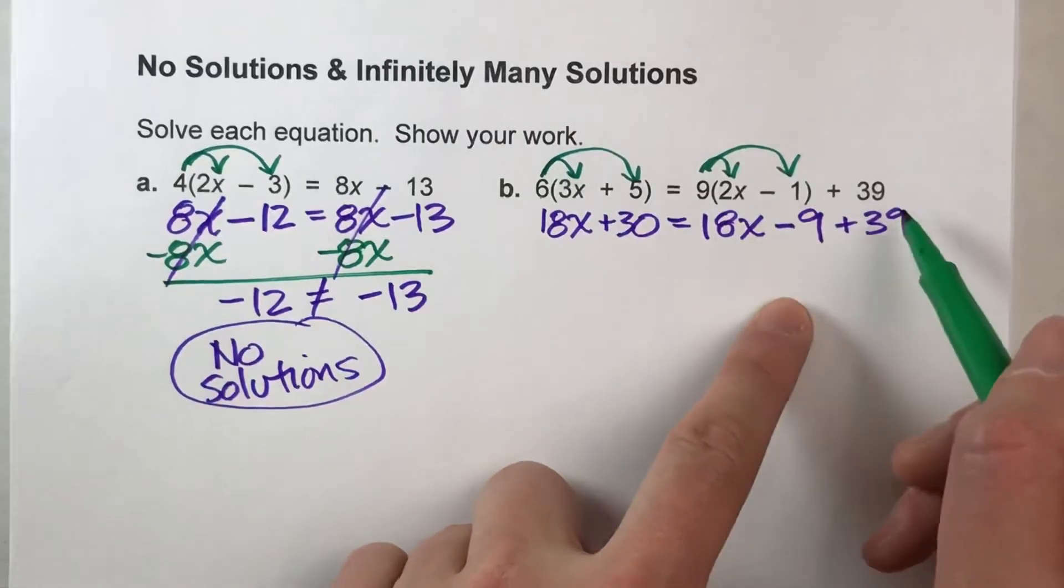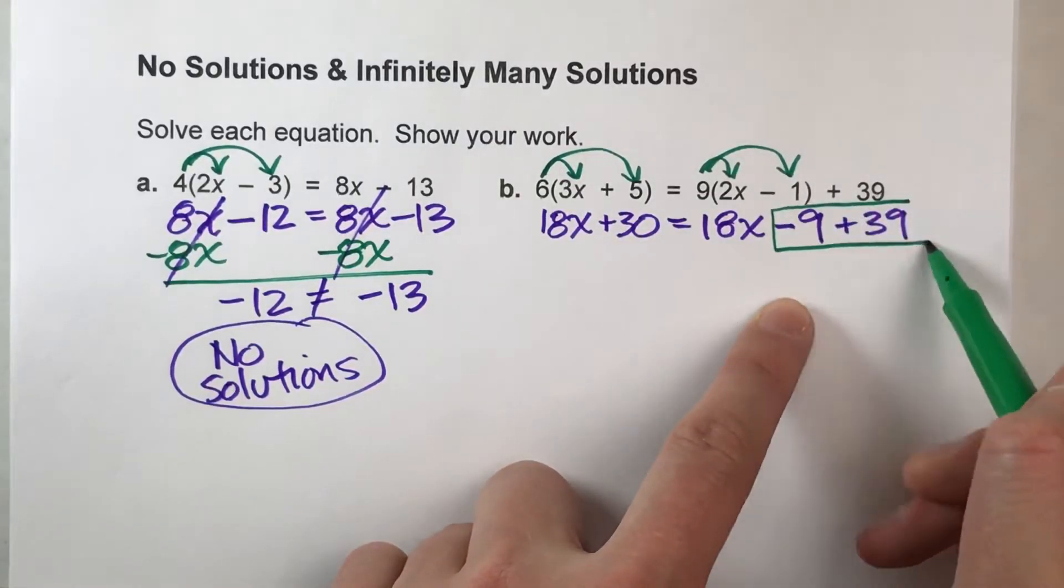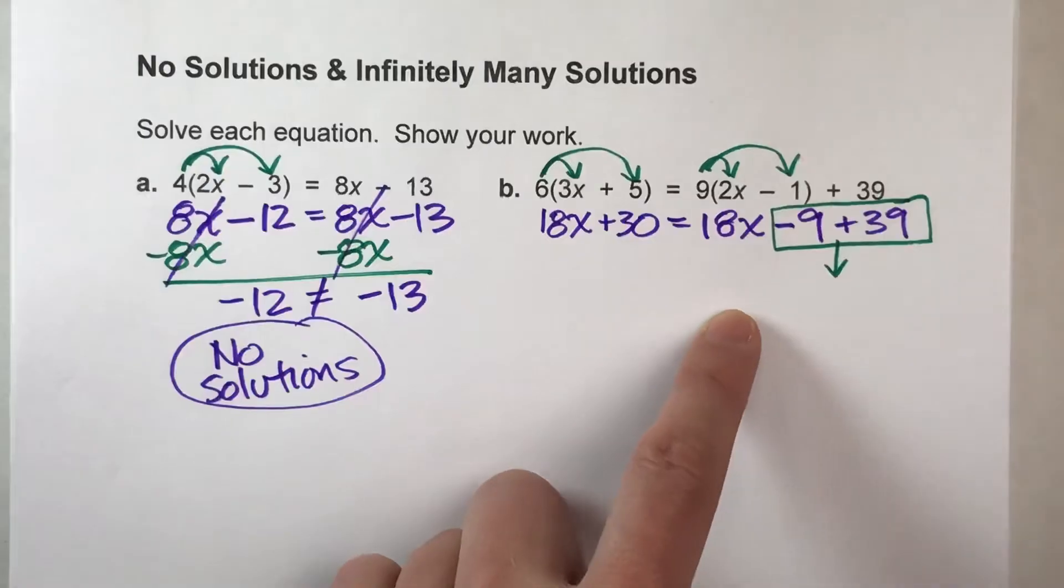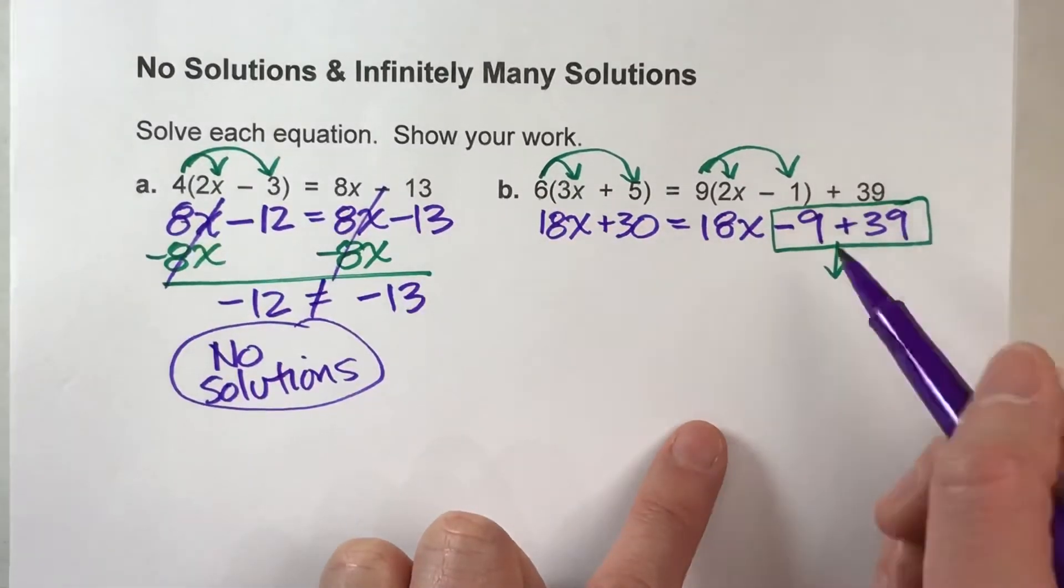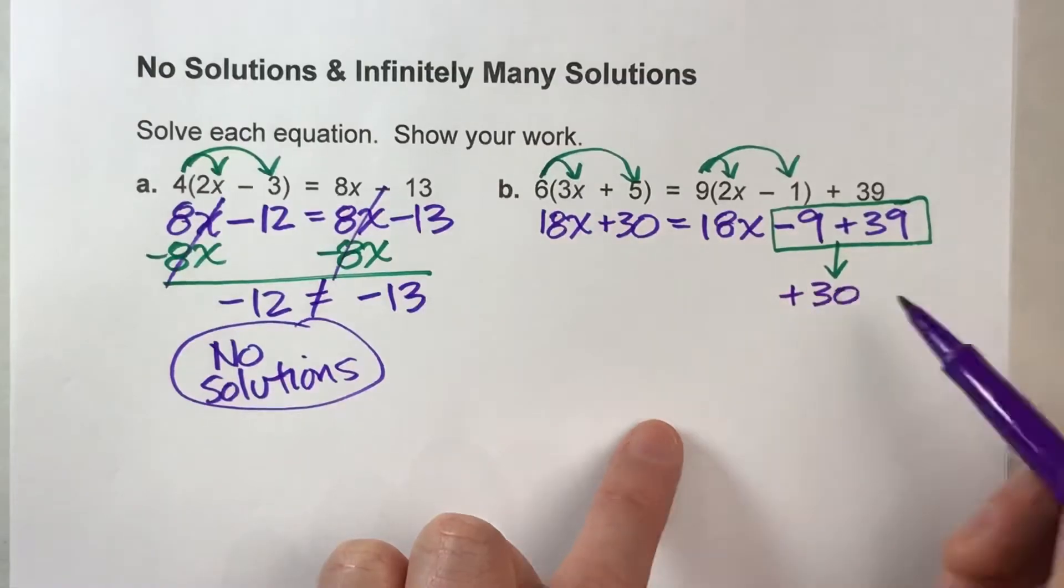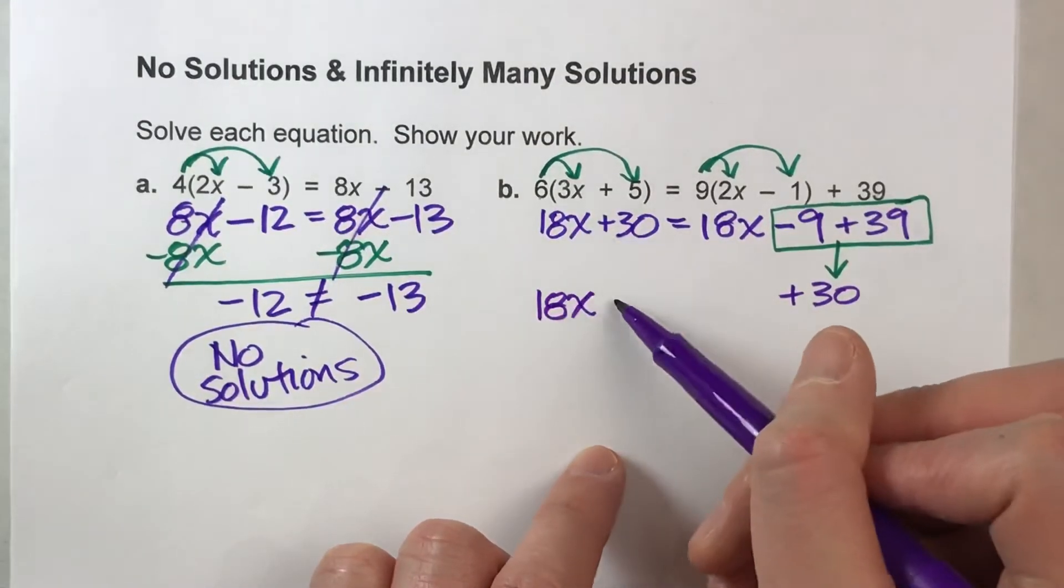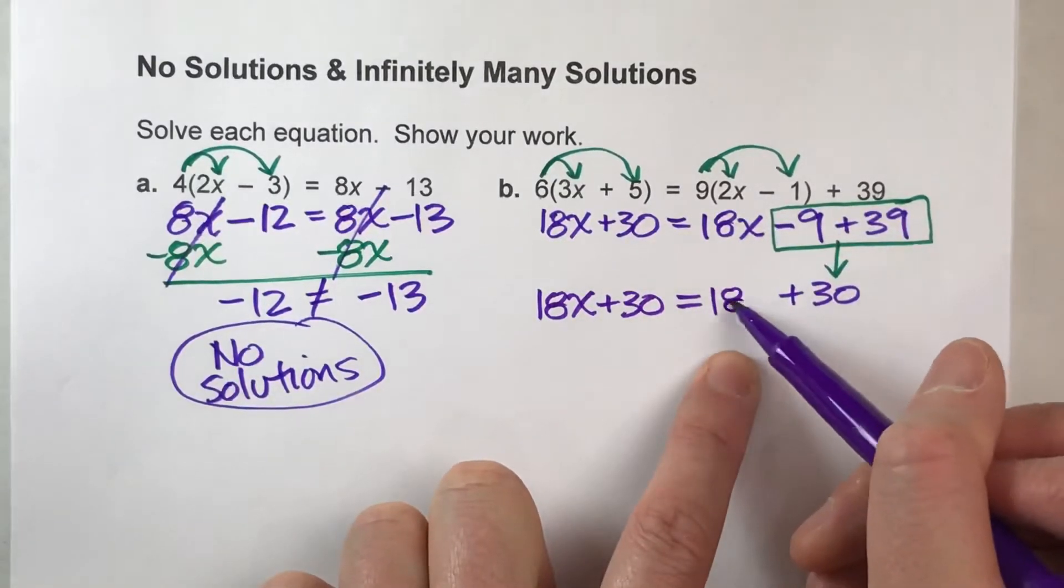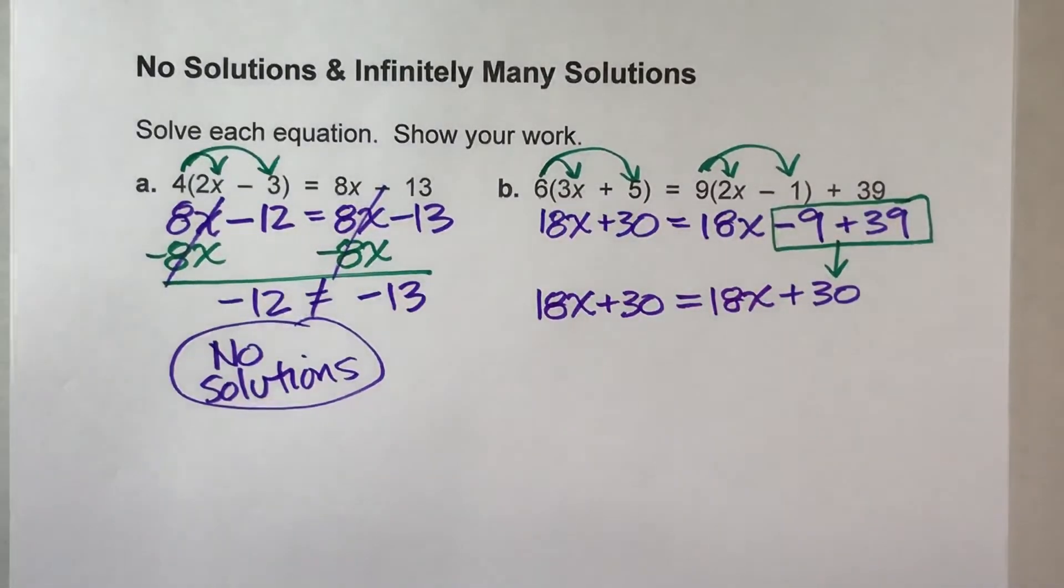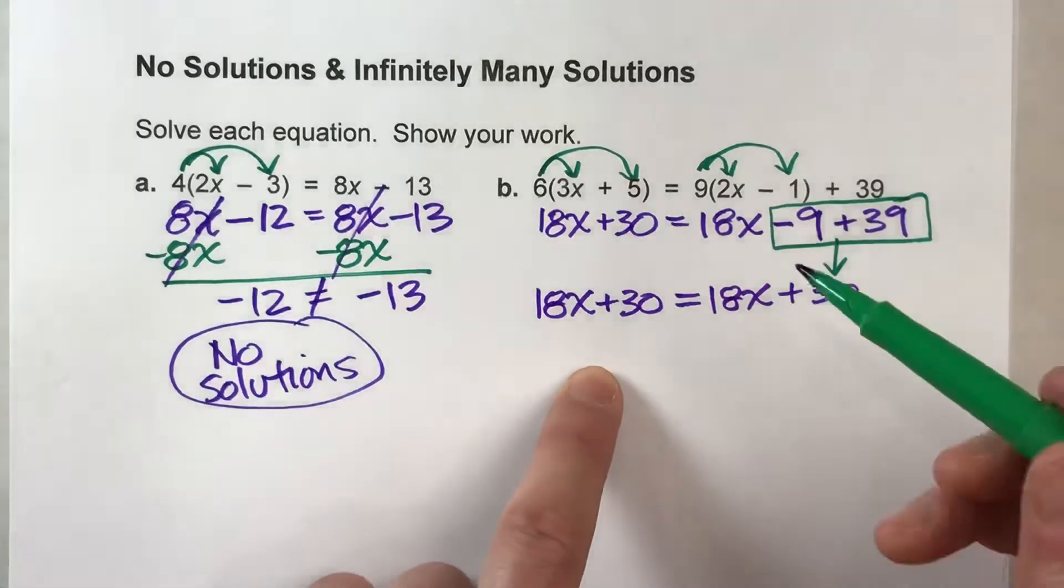Now, before I start solving it, let's combine our like terms. Over on this side, notice we've got two groups of just regular numbers. So we can combine them together. Negative 9 plus 39 is positive 30. So let me drop everything else down here. 18x plus 30 equals drop down my 18x. So you can kind of see where we're going here, but let's finish this off.